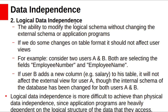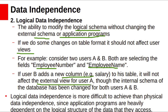Logical data independence is the ability to change the logical schema without changing the external schema or application programs. If we make changes to the table format, it should not affect user views or application programs. For example, consider two users A and B, both selecting the fields employee number and employee name. If user B adds a new column to the employee table, such as salary, it will not affect the external view of user A, even though the internal schema of the database has been changed for both users. Logical data independence is more difficult to achieve than physical data independence since application programs are heavily dependent on the logical structure of the data they access.